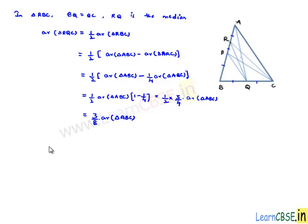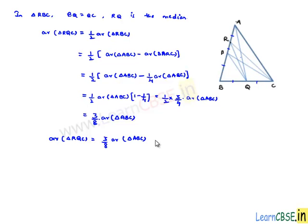So finally we have proved that area of triangle RQC equals 3/8 times area of triangle ABC. This is the third proof which was required.